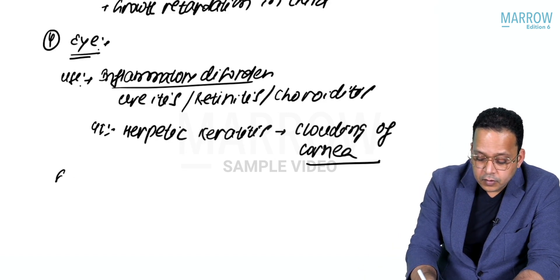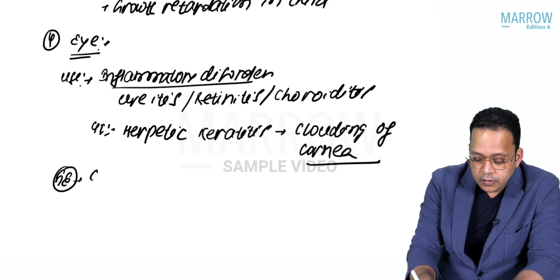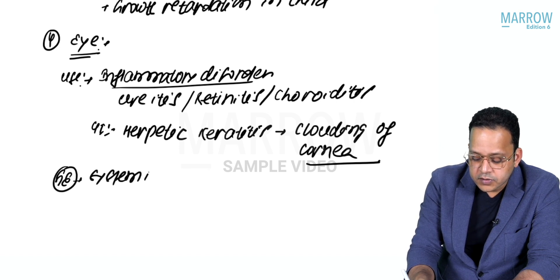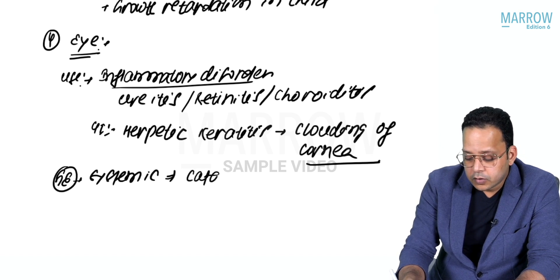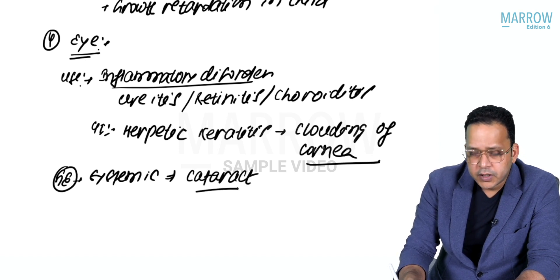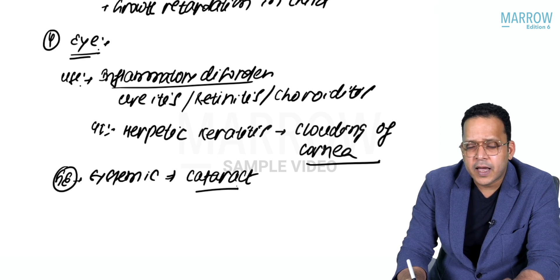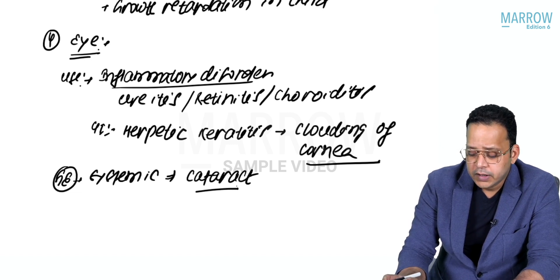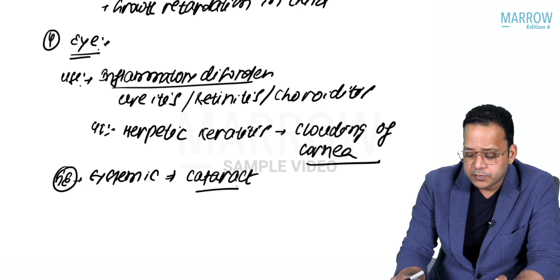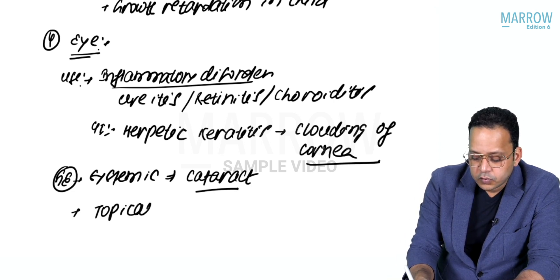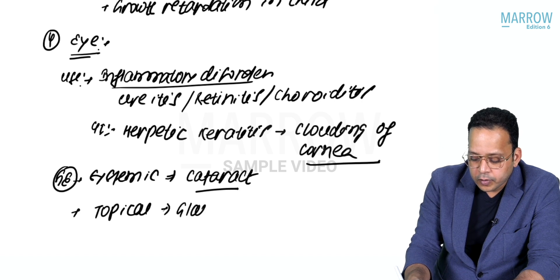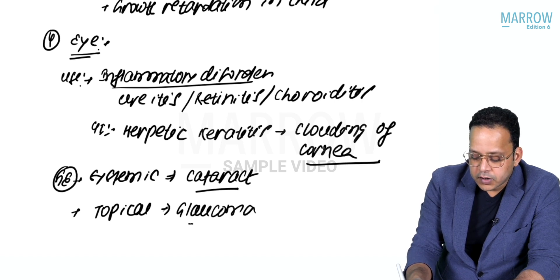Side effects of steroids: if I use systemic steroids long-term like oral, they can cause cataract - posterior subcapsular cataract. And if topical steroids are used for a long period, they end up causing glaucoma.